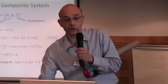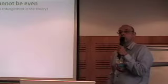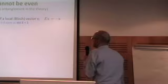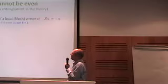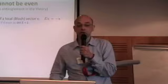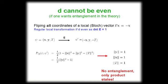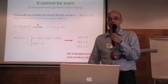Now I tell you a very short proof that d cannot be even if you really want the theory to have entanglement. You think about your local vector and you flip all coordinates of the local vector. If d is even, this is a regular transformation. So you get from x, y, t to minus x, y and minus t, because the correlations will always change the sign. Then you require the overlap, basically the probability, the overlap between the state before the transformation and the state after the transformation, must be between 0 and 1. If you put this requirement, you will see immediately that the only possible states in these theories are those which are product states. You will not have entanglement.